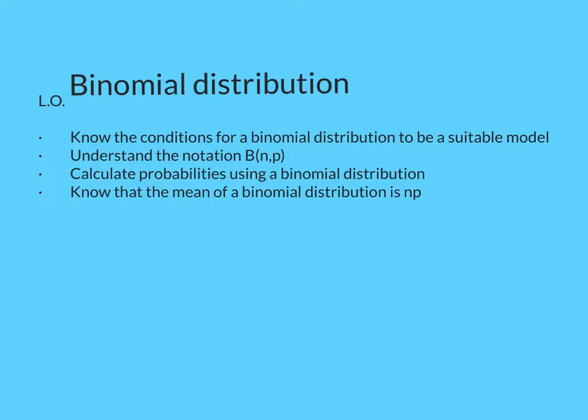We're going to start off just thinking about what is the binomial distribution. 'Bi', like bicycle, means 2. So there are 2 options here — in this case either success or failure.